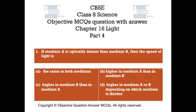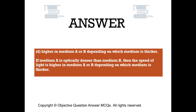The right answer is option D: higher in medium A or B depending on which medium is thicker. If medium A is optically denser than medium B, then the speed of light is higher in medium A or B depending on which medium is thicker.